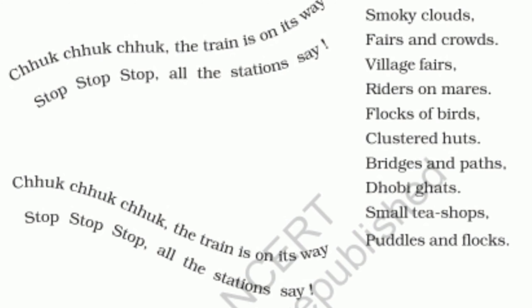Different sounds are produced by different vehicles. Train: chuk-chuk-chuk. Truck: po-po-po. Motorcycle: ghar-ghar-ghar. Scooter: pee-pee-pee. Horse cart: tap-tap-tap. Bicycle: tring-tring-tring. The engines fitted in two-wheeler vehicles like motorcycles and scooters are internal combustion engines. Combustion means the process of burning.